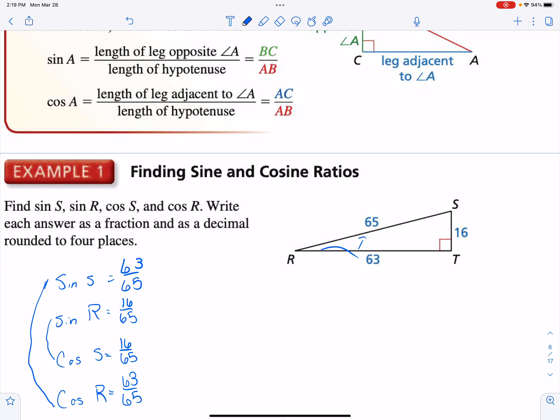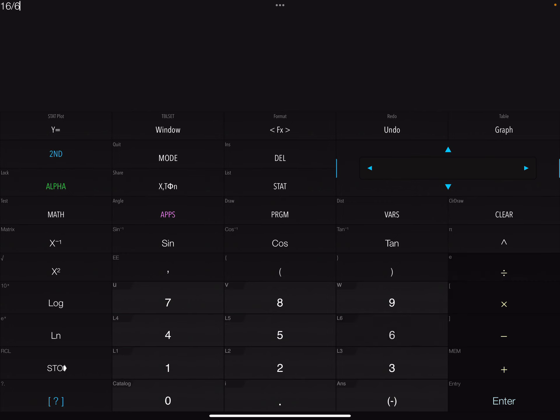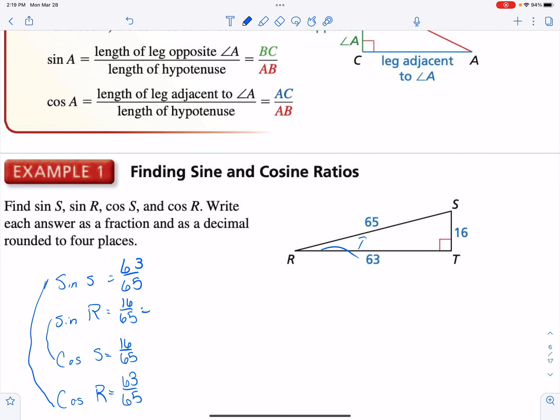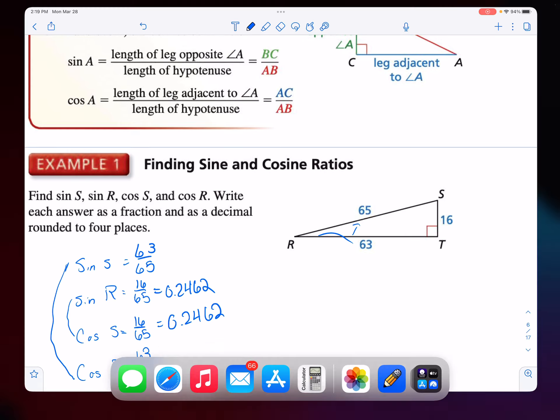Now for the calculator, if I do 16 divided by 65, I get 0.2462. And then I want to do 63 over 65. So 63 divided by 65, 9692 is what it rounds to. So equals 0.9692. We'll get into why we want four decimal places when we're finding missing angles.